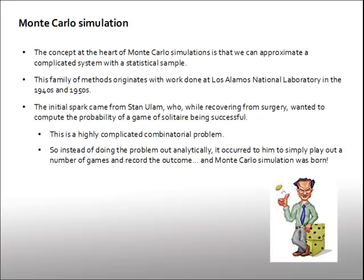The name actually comes not from one of the scientists, but from a casino — Monte Carlo. You can understand why they named it after a casino, given this whole idea of chance and probability. It also might have had something to do with the fact that Ulam's father lost a pretty significant amount of money in that casino.